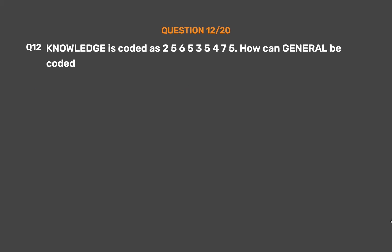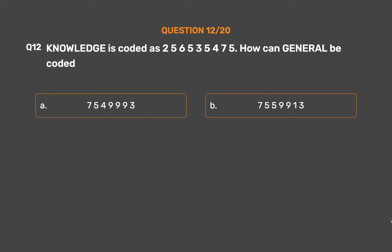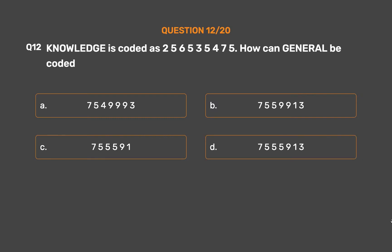Question number 12: 'Knowledge' is coded as 256535475. How can 'general' be coded? Option A: 75499993. Option B: 7559913. Option C: 7555591. Option D: 75555913.